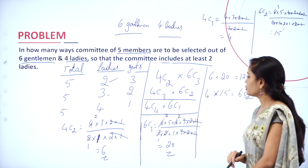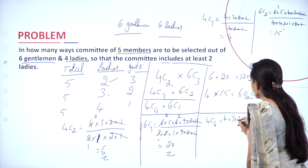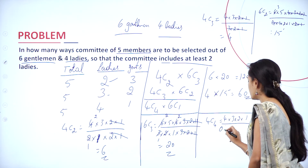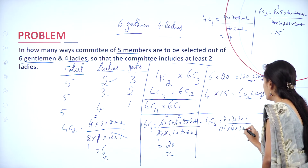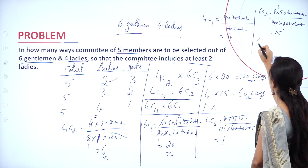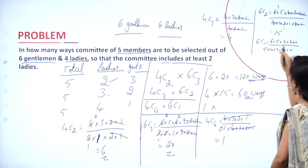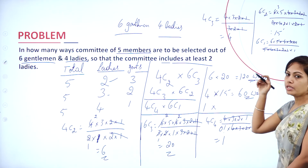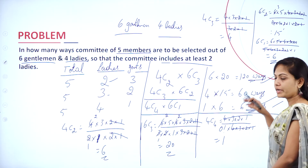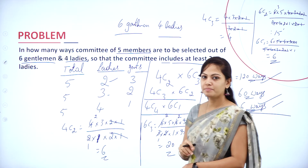Last combination: 4C4 × 6C1. 4C4 = 4! / (0! × 4!) = 1, since 0! = 1. And 6C1 = 6! / (5! × 1!) = 6. So 4C4 × 6C1 = 1 × 6 = 6 ways. The total is 120 + 60 + 6 = 186 ways to select the committee with at least 2 ladies.